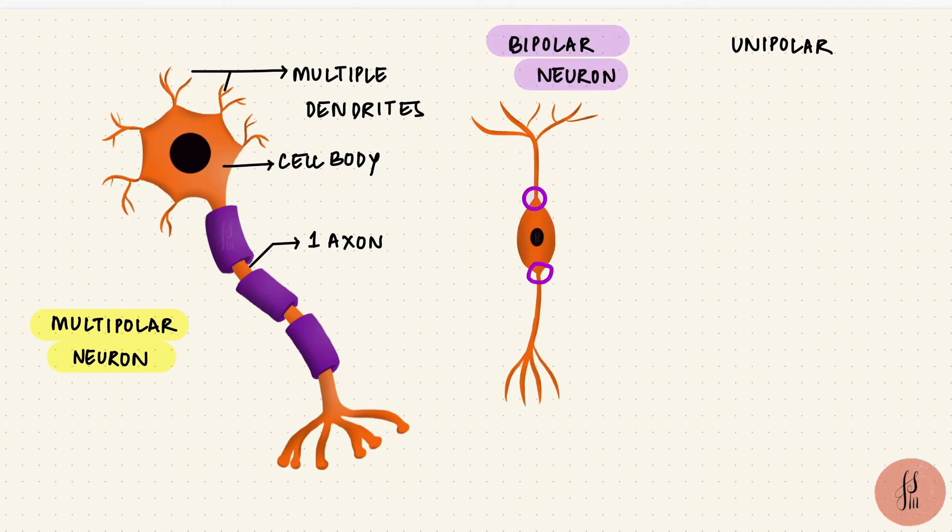Bipolar neurons have two poles, a cell body with one axon and one dendrite. These are sensory neurons, and they're seen in special sense organs, the eyes, ears, and the nose. In the eyes and the retina, the olfactory epithelium of the nose. These are examples of where bipolar neurons are.